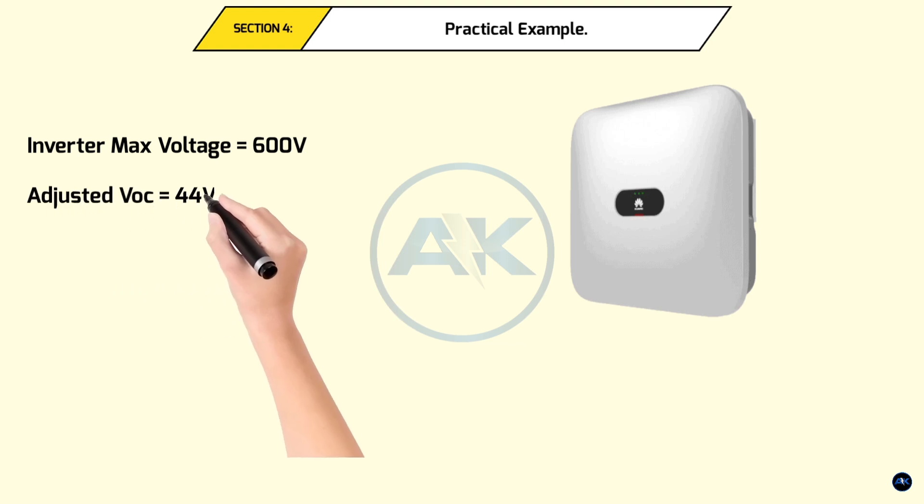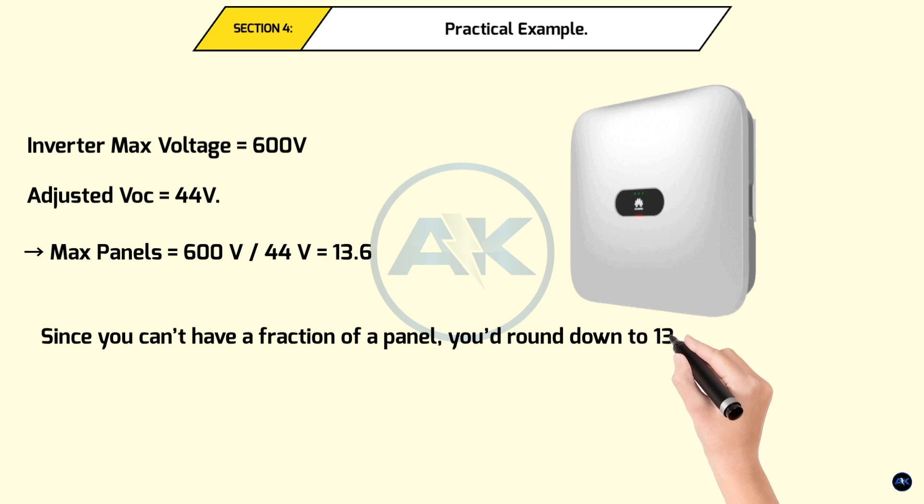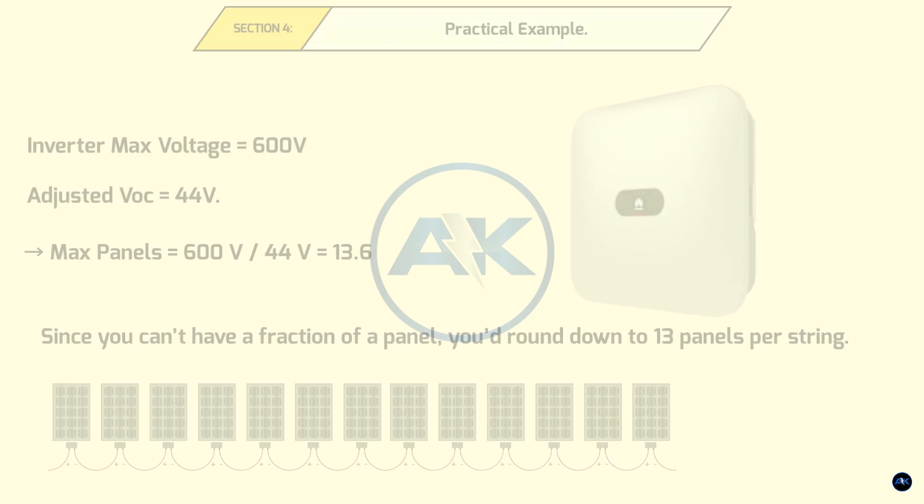Section 4. Practical Example. Let's say you have an inverter with a maximum input voltage of 600 volts and panels with an adjusted VOC of 44 volts. Dividing 600 by 44 gives you about 13.6. Since you can't have a fraction of a panel, you'd round down to 13 panels per string. Remember, it's always better to stay under the inverter's limit to account for any unexpected voltage spikes.